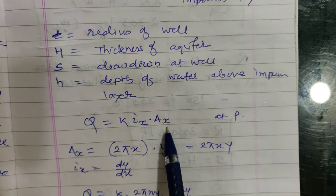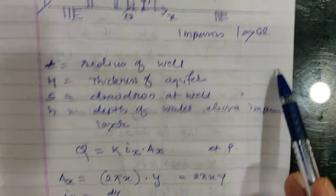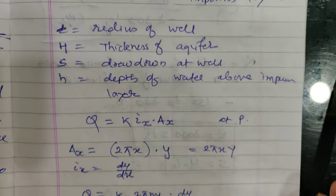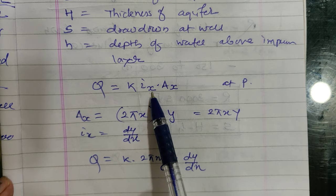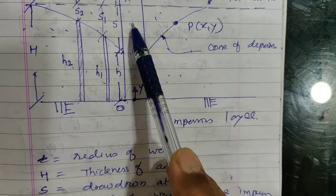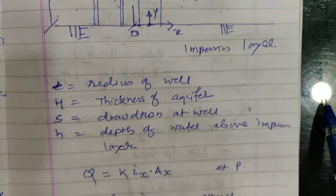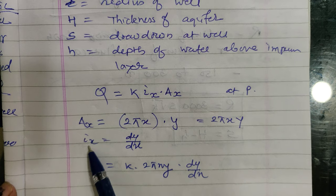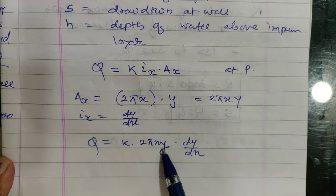The discharge is given by Q = k × i_x × A_x. Considering any point P at distance x with height y: the hydraulic gradient i_x = dy/dx, and the cross-sectional area A_x = 2πxy (a cylindrical surface through which water enters). Therefore, Q = k × 2πxy × dy/dx.